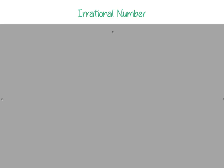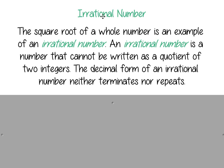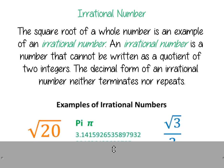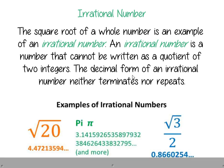The last part is comparing real numbers, including a review of irrational numbers. The square root of a whole number is an example of an irrational number — a number that cannot be written as a quotient of two integers. The decimal form neither terminates nor repeats. For example, pi is a decimal that has no end and does not repeat. Similarly, the square root of 20 or the square root of 3 divided by 2 go on forever with no pattern.